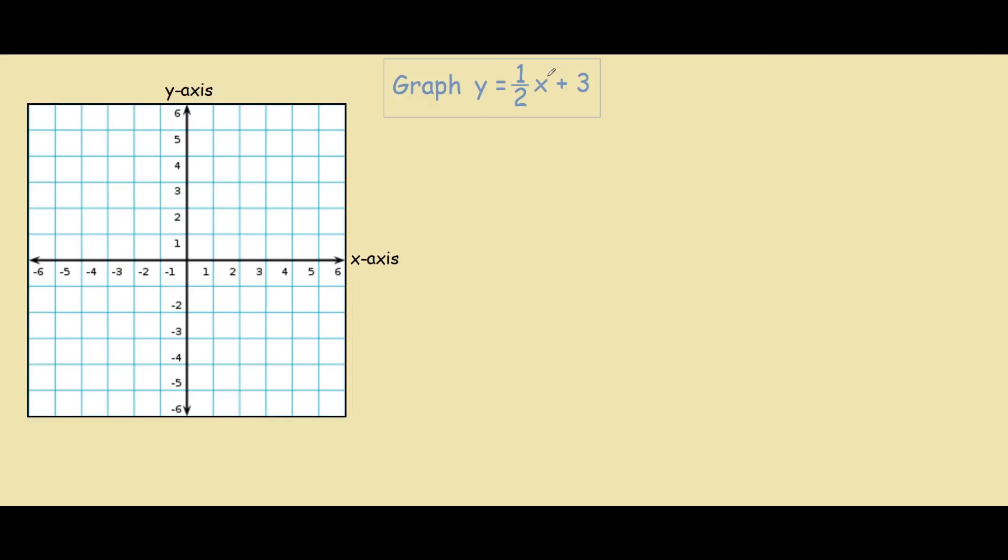To graph y equals one-half x plus three, we need to find two points in the graph: the y-intercept and the slope. Step one, find the y-intercept.